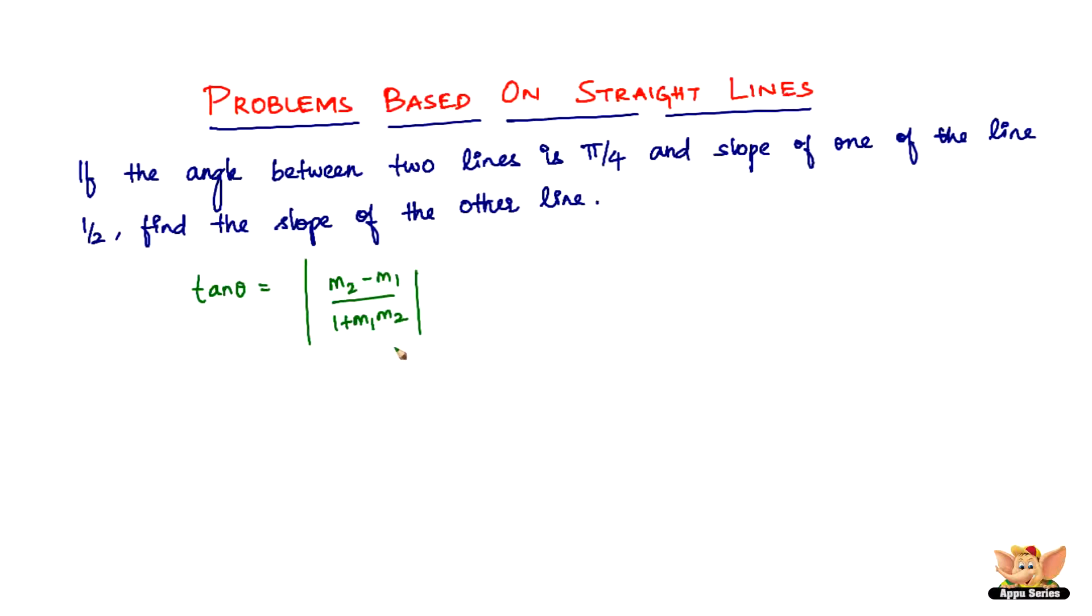But then, of course, when you've got the two slopes of the line, but here it's the other way around. We've got the angle, but we do not have the slopes of the two lines. We've just got slope of one of the lines. We need to find the slope of the other line.